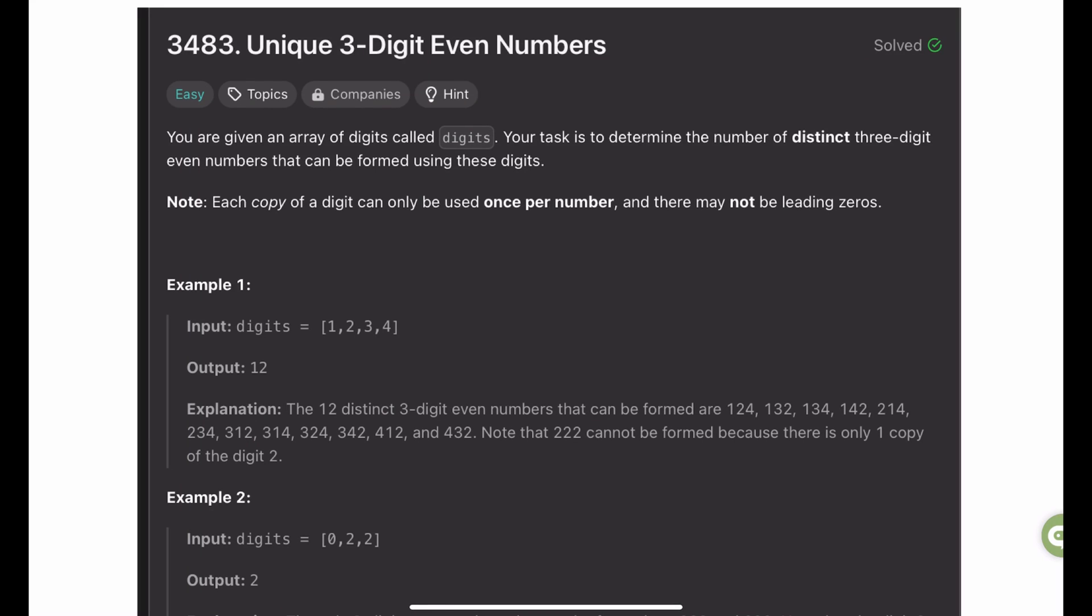Hello everyone, in this video we will be solving problem 3483, unique 3-digit even numbers. The problem statement is we are given an array of digits called digits. Our task is to determine the number of distinct 3-digit even numbers that we can form using these digits.